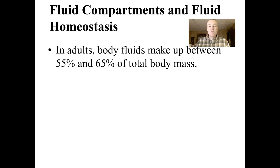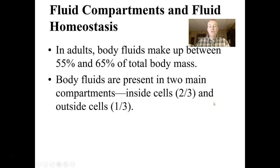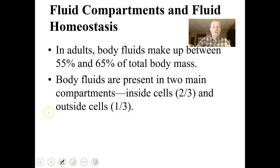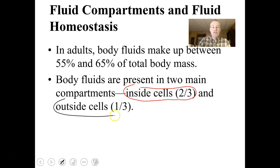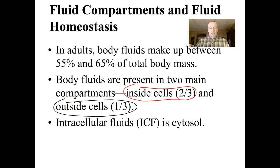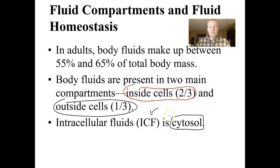In adults, body fluids make up between 55% and 65% of the total mass of a human body, so a lot of fluids are inside of us. There are two main compartments: inside cells, where about two-thirds of your water is found, and outside of cells. The water inside our cells is called intracellular fluid, abbreviated ICF — basically the cytosol, the fluid part of your cells.